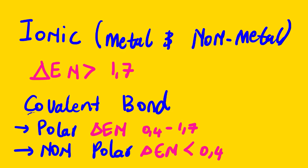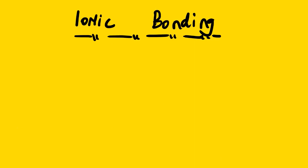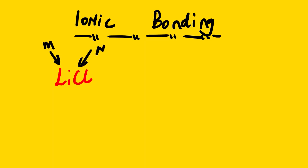Ionic bonding involves a metal and a non-metal. Let's explain this in detail using the example of lithium bonding with chlorine to form lithium chloride. Lithium is a metal and chlorine is a non-metal, so from these properties we can conclude that this is an ionic bond.